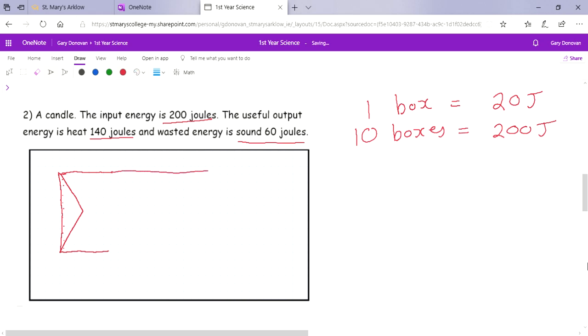Now remember, useful energy goes straight forward. So this time we have 140 joules of useful energy. So 140 joules is useful. Now how many boxes would that be? Well, if one box is 20 joules, if we divide this by 20, we'll get 7. So that would be 7 boxes on our diagram. So I'm going to count down 7: 1, 2, 3, 4, 5, 6, 7. And that's what our arrow is going to be like. It's going to be something like that. Remember the width of the arrow represents how much energy it is.